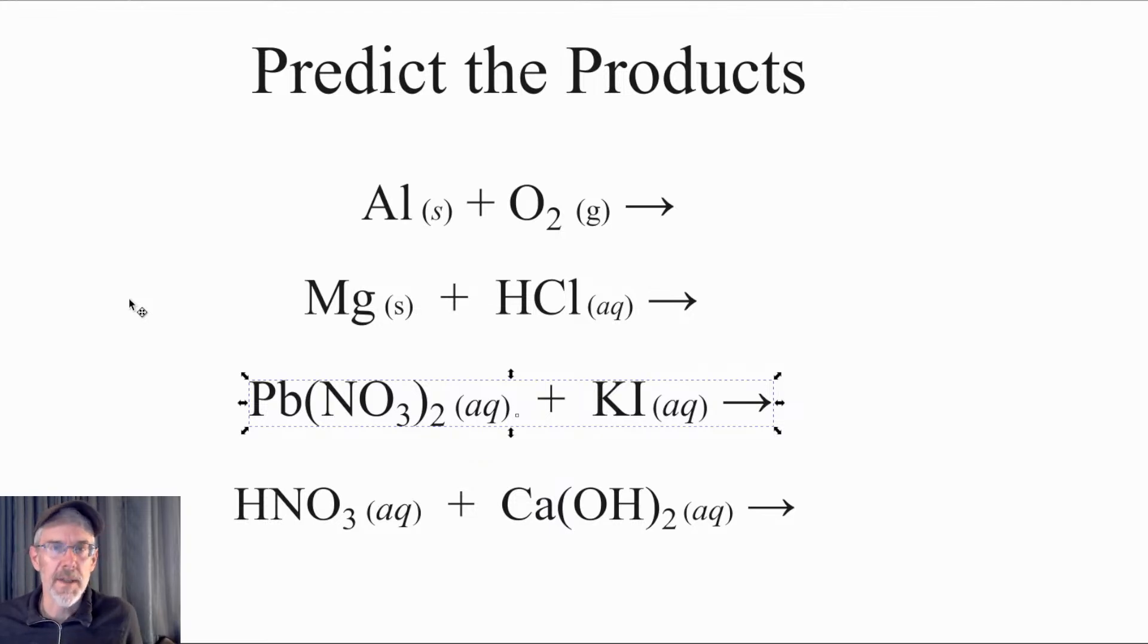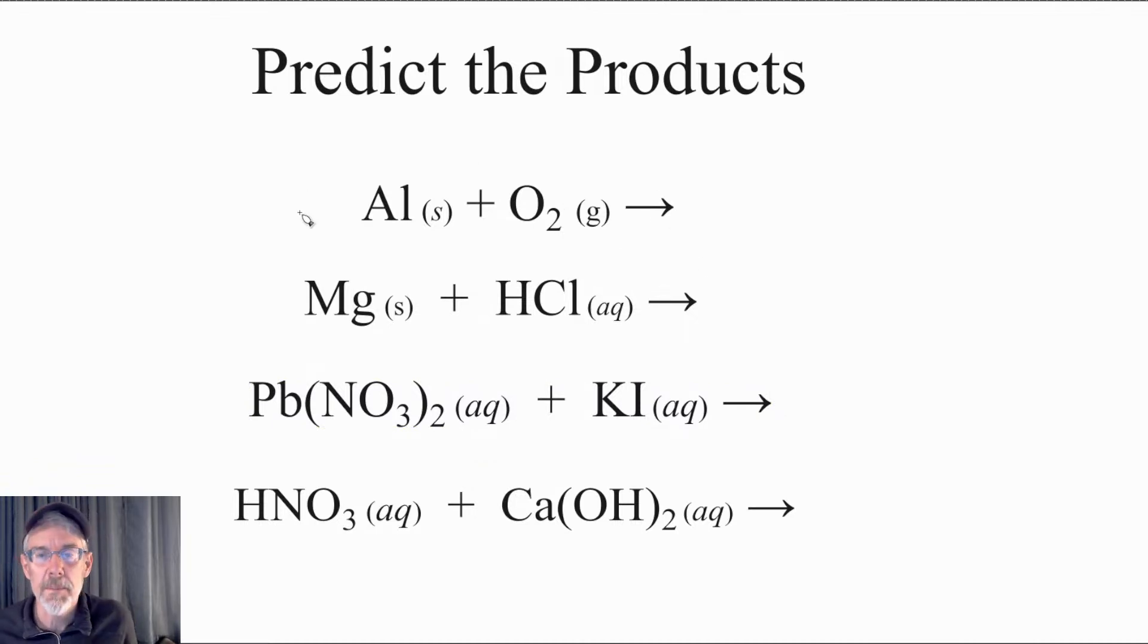So as a chemistry teacher, I can look at something like this. I can give a student a predicting problem and tell pretty quickly if they understand chemistry because there's a lot of different parts to it. So if you're given something like this, aluminum plus oxygen gas, you want to try to figure out what the products are. You need to know what type of reaction it is. You have a metal, aluminum, and oxygen gas, but you only have two types of atoms. Two things come together, form one thing.